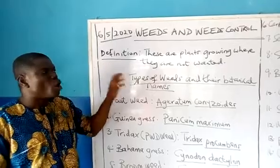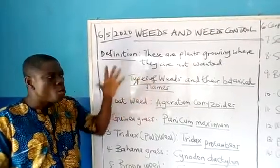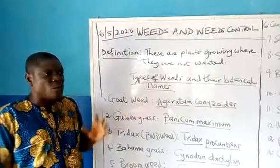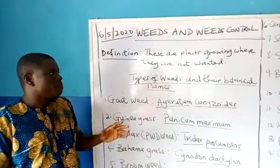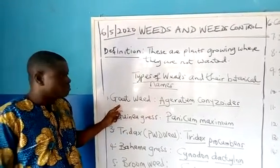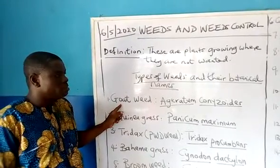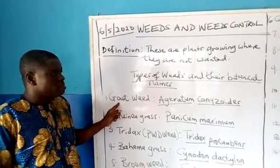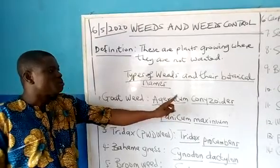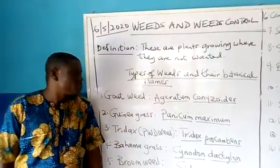Let's look at some common weeds. There are so many weeds, but let's look at some common weeds we can find around our vicinity and locality. Some of them include Goatweed, whose botanical name is Ageratum conyzoides. That is what Goatweed is.